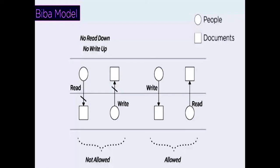Another representation of the Biba Integrity Model is shown here. It clearly indicates what is allowed and what is not allowed. Reading downwards and writing upwards is not allowed, whereas writing down and reading up is allowed in the Biba Integrity Model. By this way, it maintains integrity among concurrent users.